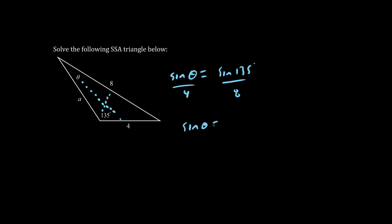We multiply both sides by the denominator 4. So we have 4 times sine 135 over 8. So sine theta is approximately 0.35355. Hitting sine inverse, we get the angle theta is about 20.7 degrees. Keep all your digits of accuracy.